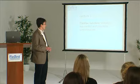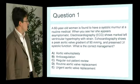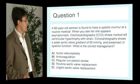Starting with question one: a 60-year-old woman is found to have a systolic murmur at a routine medical. When you see her she appears asymptomatic. The ECG shows marked left ventricular hypertrophy with strain, and the echocardiogram shows a peak aortic valve gradient of 90 mmHg with preserved left ventricular systolic function. What is the correct management?